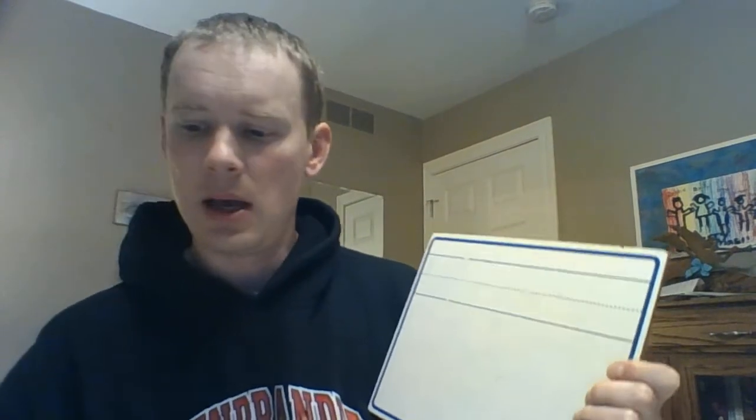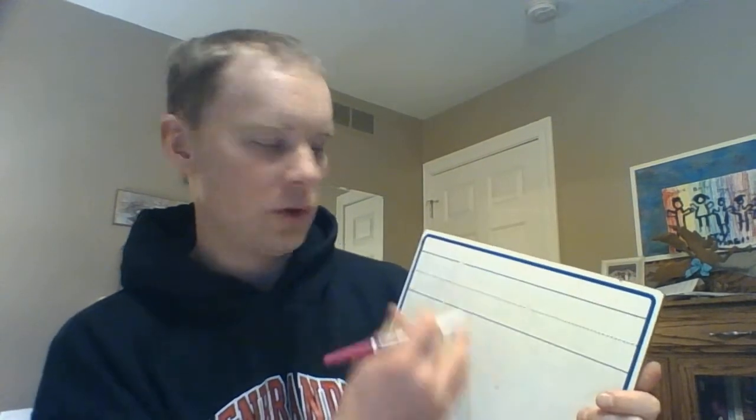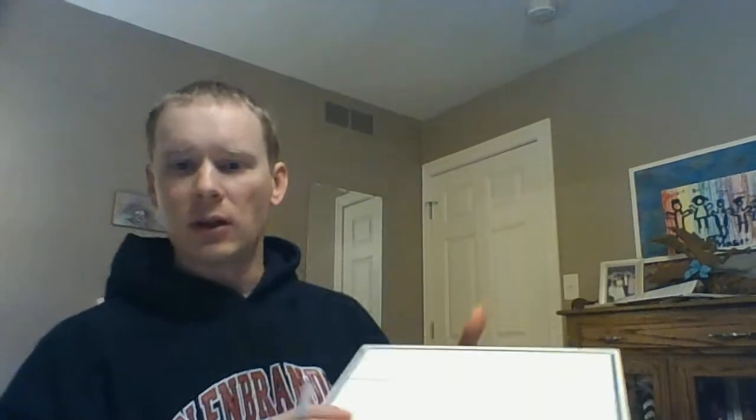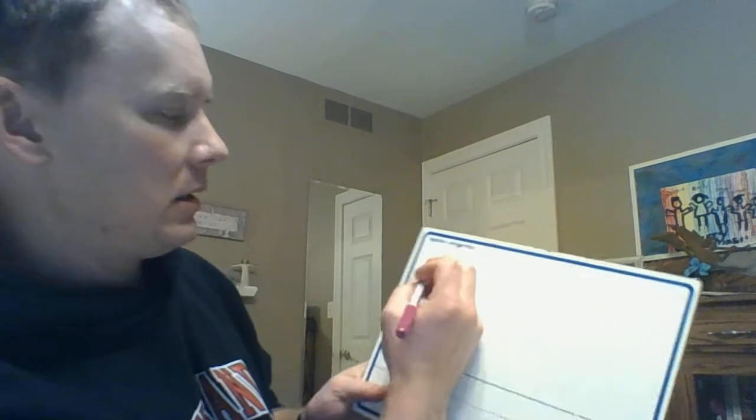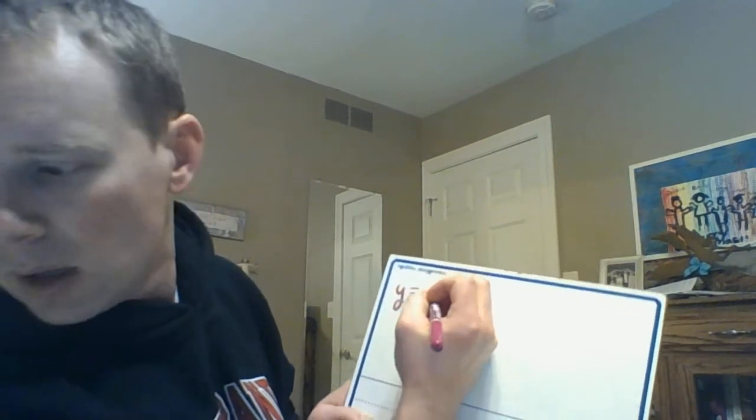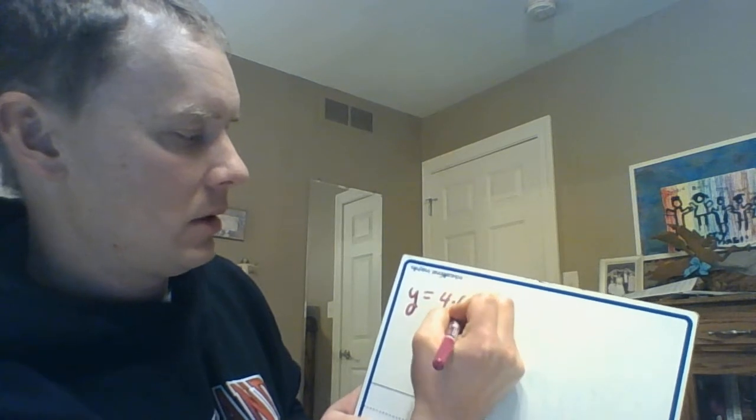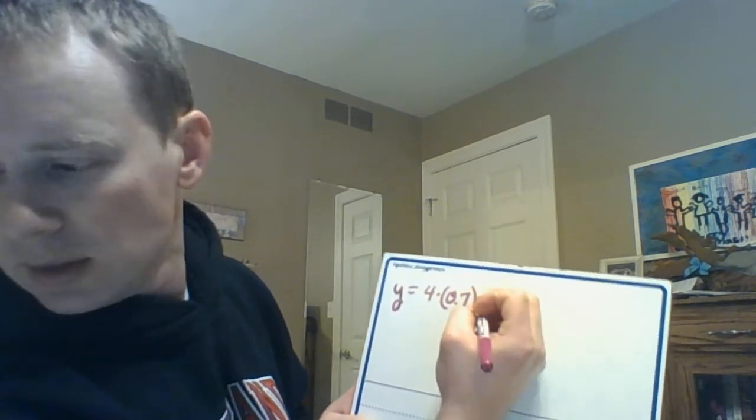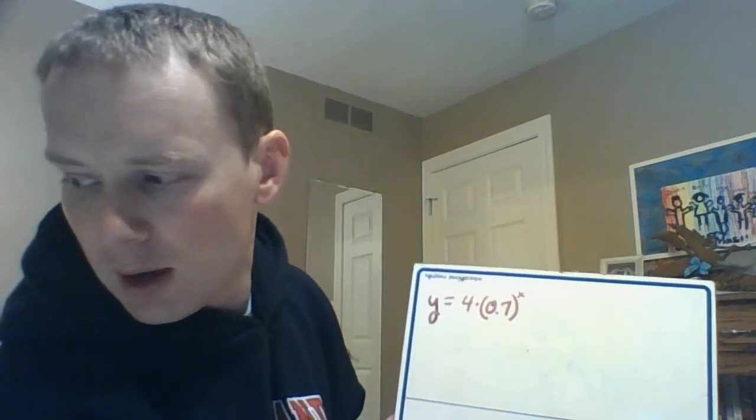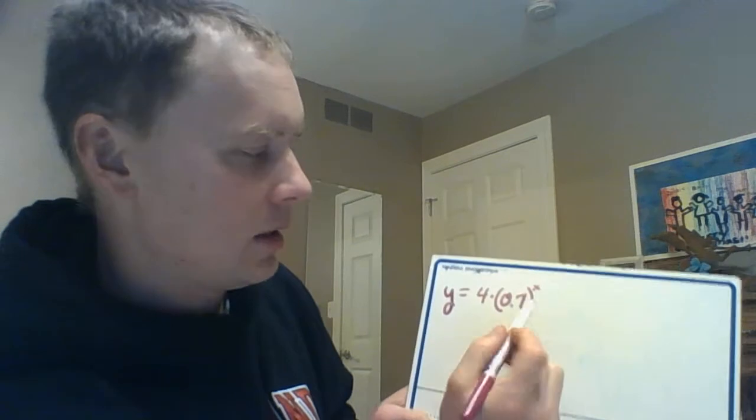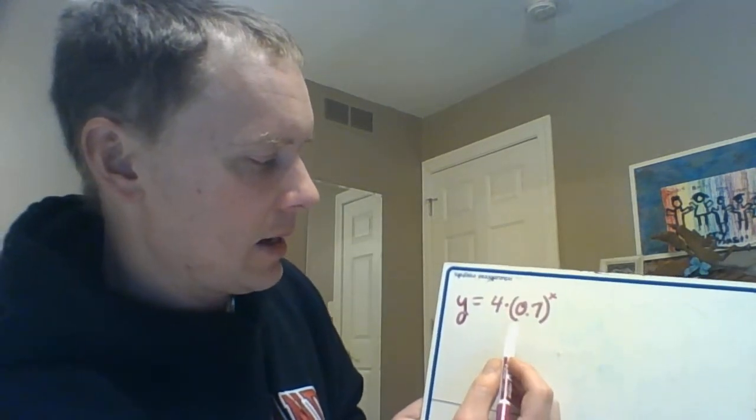With that said, let's give it a shot. I borrowed my kids' whiteboard here. Real quick, I want to give you three example functions here. The first one is y = 4(0.7)^x. First off, to recognize that is an exponential function because the variable's in the exponent location. And then the next question: what's your initial value? Well, the initial value in this case would be your 4. I think you guys are pretty good with that.